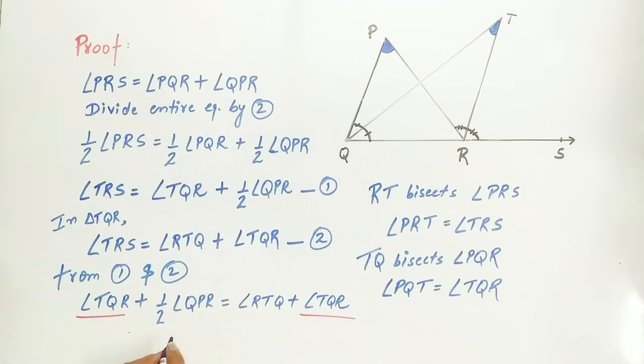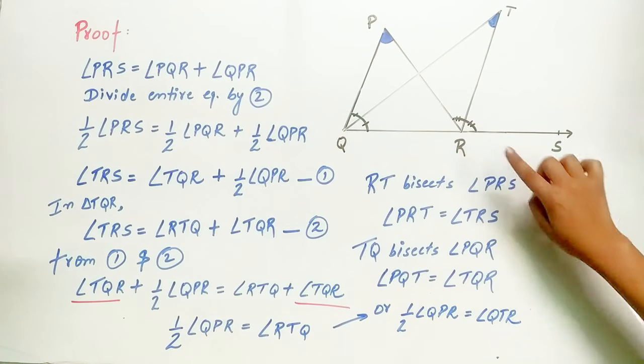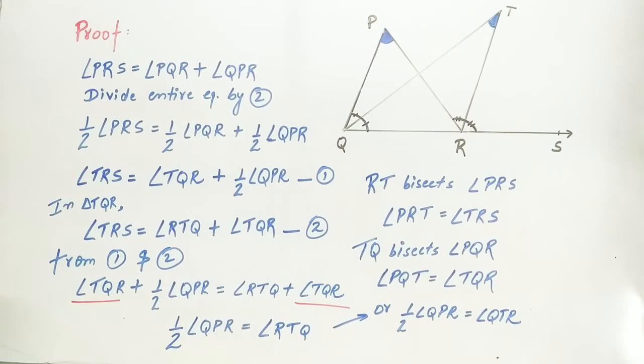Remaining is half of angle QPR equals angle RTQ. Or, half of angle QPR equals angle QTR. Angle RTQ equals angle QTR. They both mean the same thing.